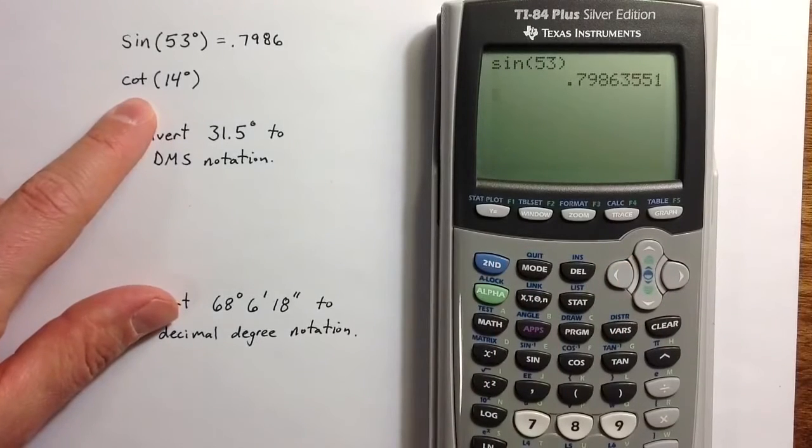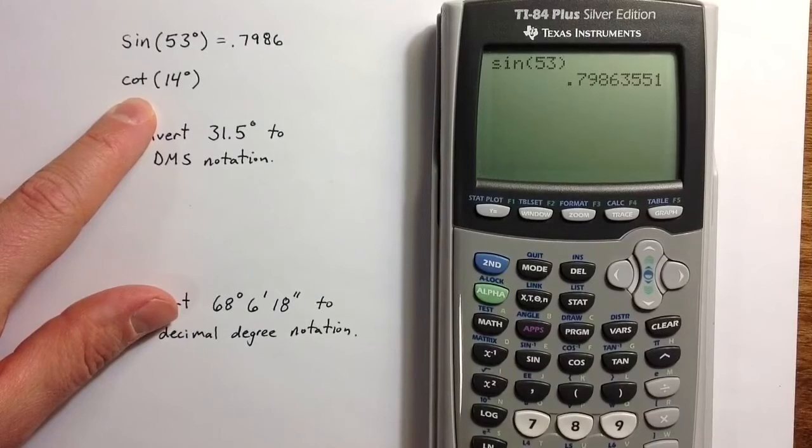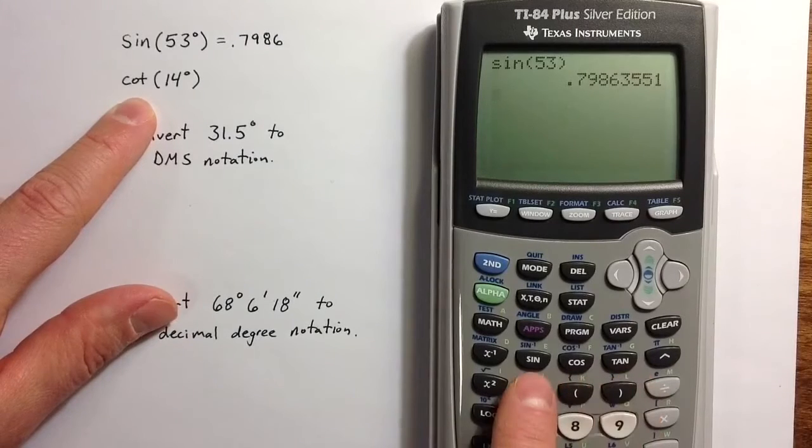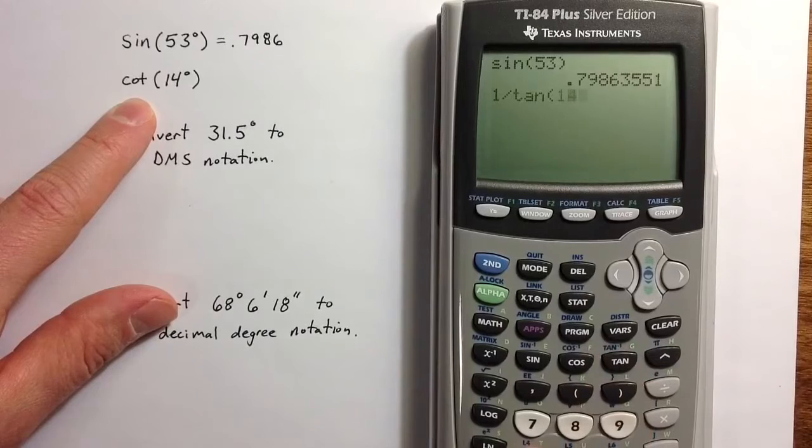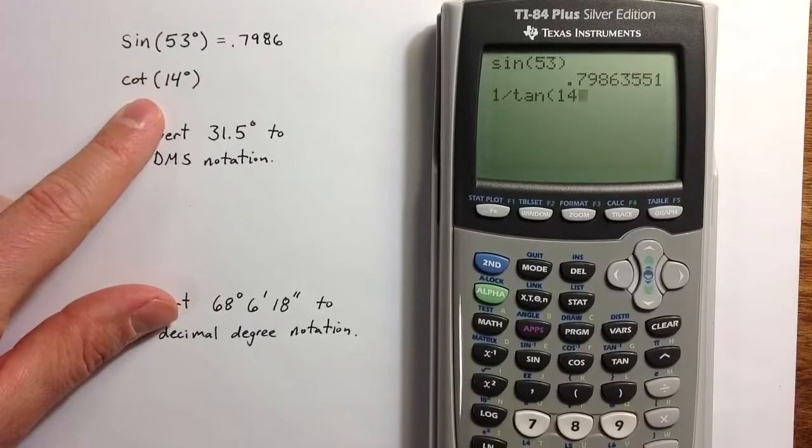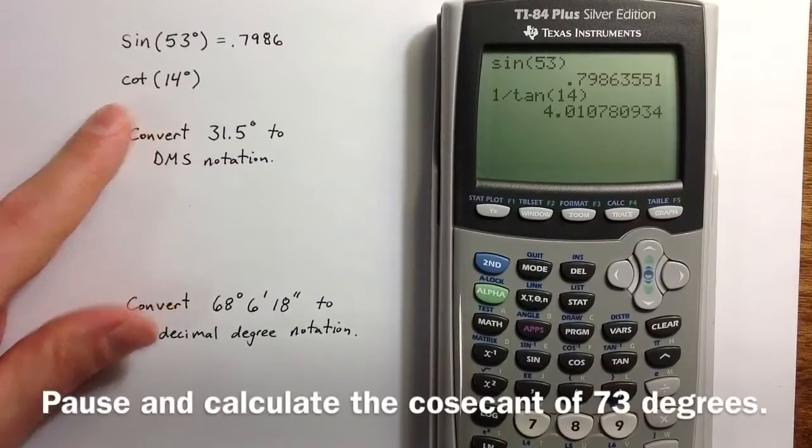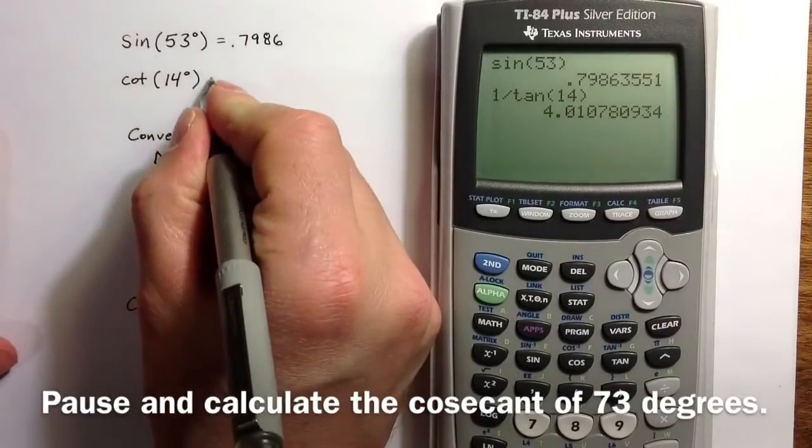For cotangent, things are a little bit more complicated. Cotangent is not directly available on the calculator, but it is the reciprocal of tangent. So I can enter 1 divided by tangent of 14 degrees to find the value for cotangent. The value for cotangent is 4.01.